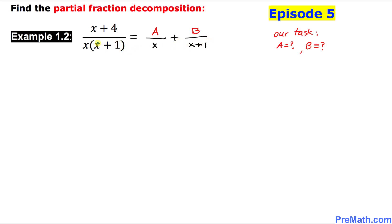Let's move on to our next step. We focus on the denominator on the left hand side, which is x times x plus 1. We are going to multiply this quantity across the board — multiplying x times x plus 1 on each and every fraction across the board.